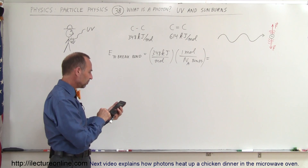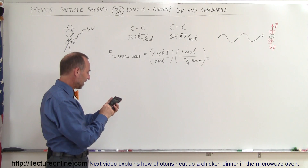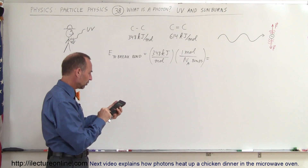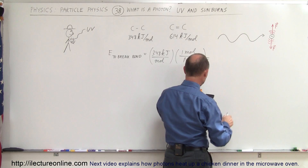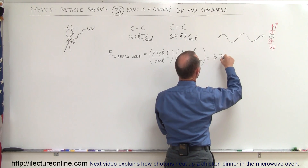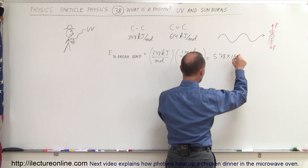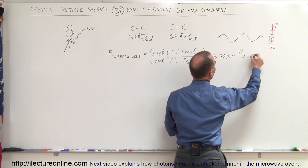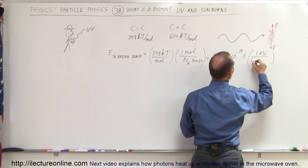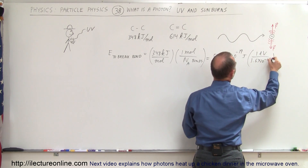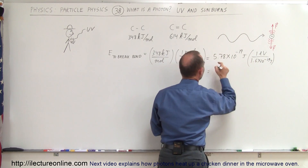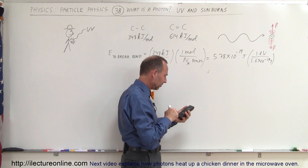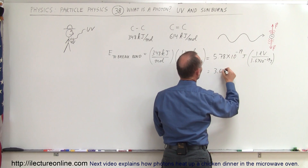We take 348,000 — because kilo means 1,000 — divide by Avogadro's number, which is 6.02×10²³, and that gives us 5.78×10⁻¹⁹ joules. If we convert that to electron volts, where 1 electron volt equals 1.6×10⁻¹⁹ joules, and divide, we get 3.61 electron volts.